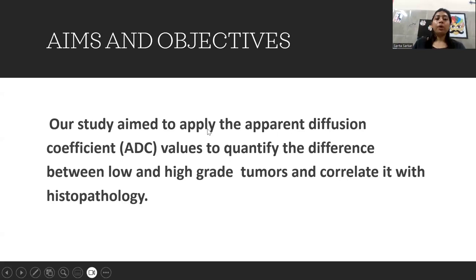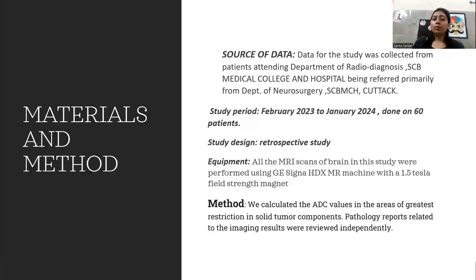The aim and objective of our study was to apply ADC values to quantify the difference between low and high grade tumors and correlate them with histopathology. Data were collected from patients attending the department of radio diagnosis, primarily referred from neurosurgery. The study period was 11 months, conducted on 60 patients, using a retrospective study design. All patients underwent MR scan using a 1.5 tesla GE Signa HDX machine. We performed the standard MR protocol, calculated ADC values in areas of greatest diffusion restriction in solid tumor components, and correlated with histopathology reports.